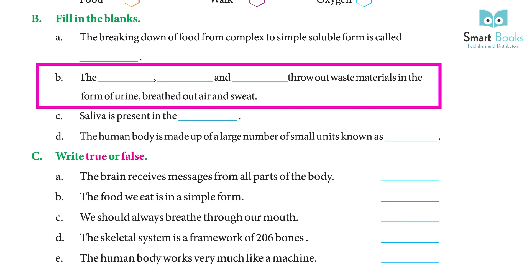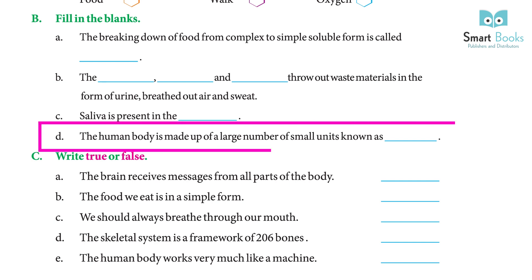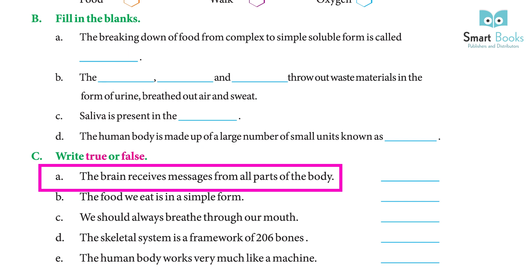The organs that throw out waste materials in the form of urine, exhaled air, and sweat are — answer: kidneys, lungs, and skin. (c) Saliva is present in the — answer: mouth. (d) The human body is made up of a large number of small units known as — answer: cells.